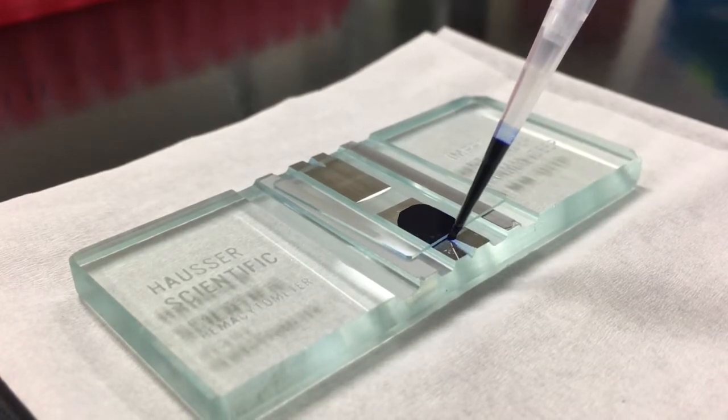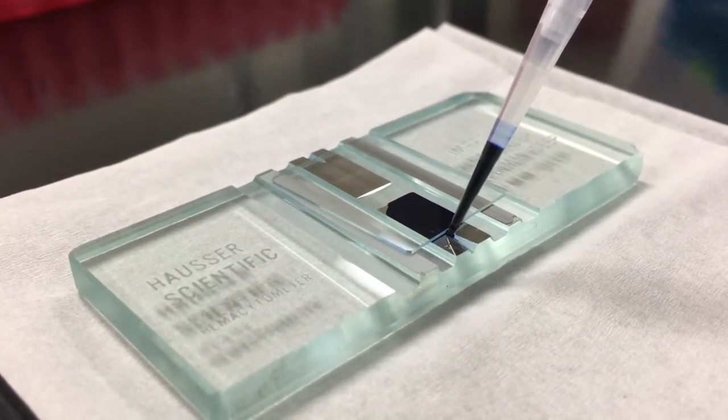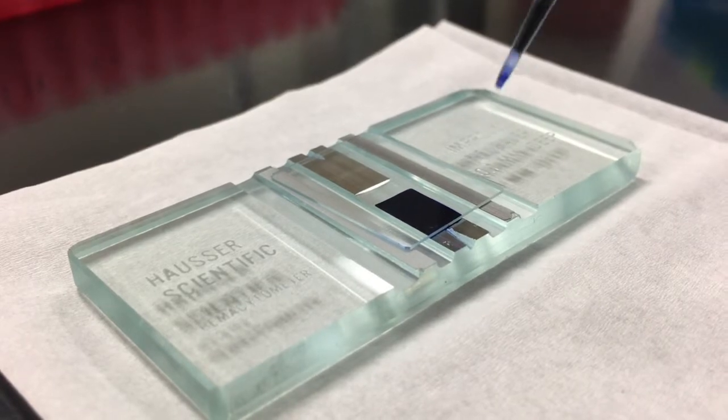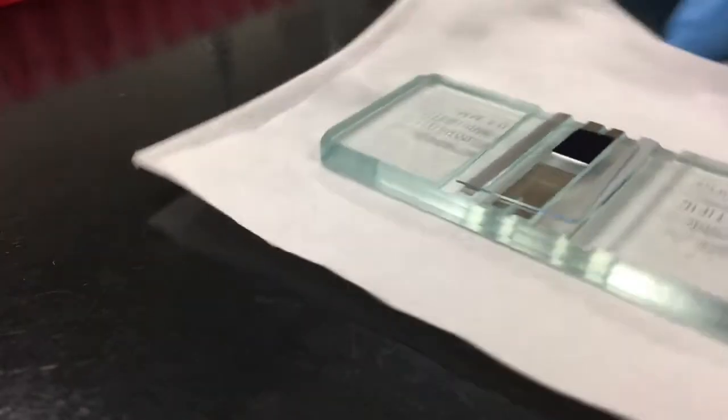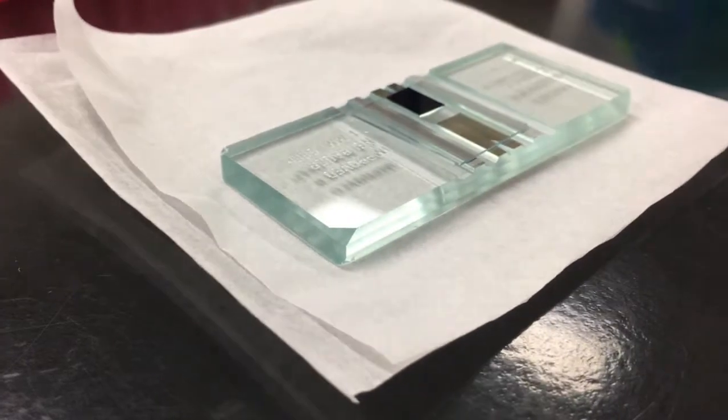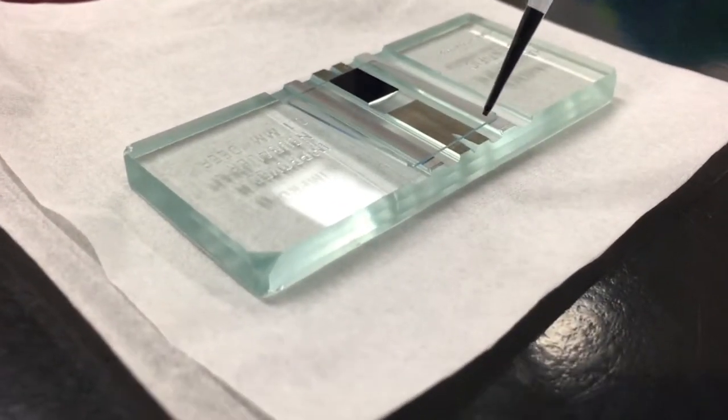Depress the plunger slowly and allow the suspension to be drawn under the cover slip until it completely fills the chamber. Stop filling once the fluid reaches the edges of the chamber and appear as sharp straight lines. If the edges appear wavy you have overfilled the chamber and need to start over.